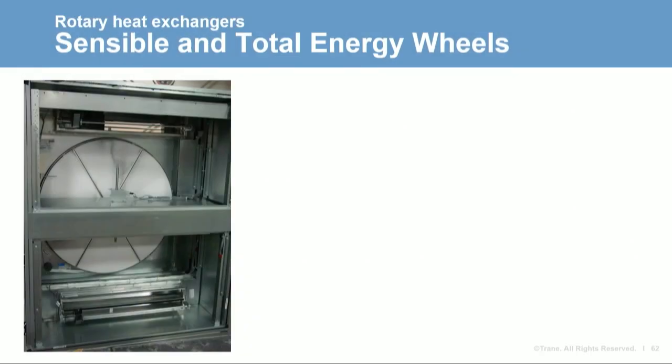The last technology to discuss is rotary heat exchangers, commonly called heat recovery wheels. Some wheels are designed for sensible heat transfer only, but most models are designed to transfer sensible and latent heat — these are sometimes called total energy wheels or enthalpy wheels. The wheel rotates between 20 and 60 revolutions per minute between the exhaust and outdoor airstreams. Total energy wheels are made with or covered by a desiccant and adsorbent that attracts water vapor, such as silica gel, polymers, molecular sieves, and others.